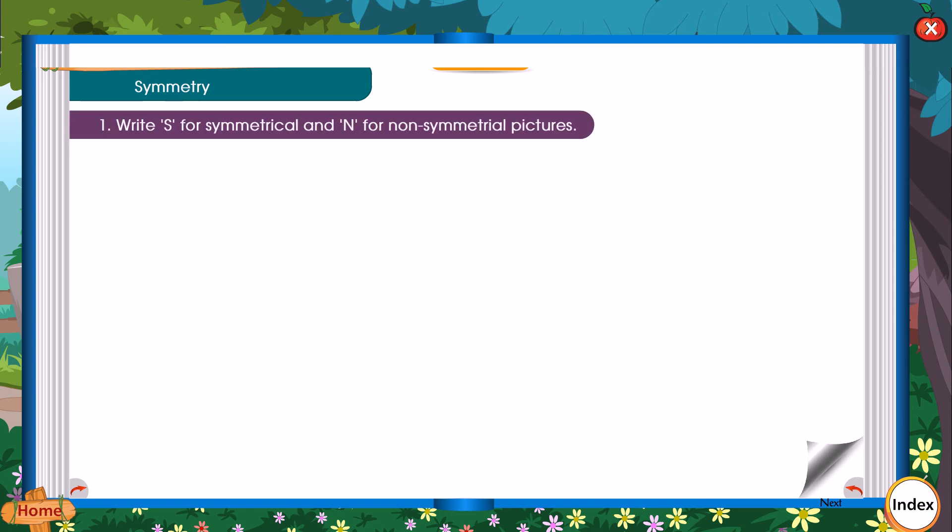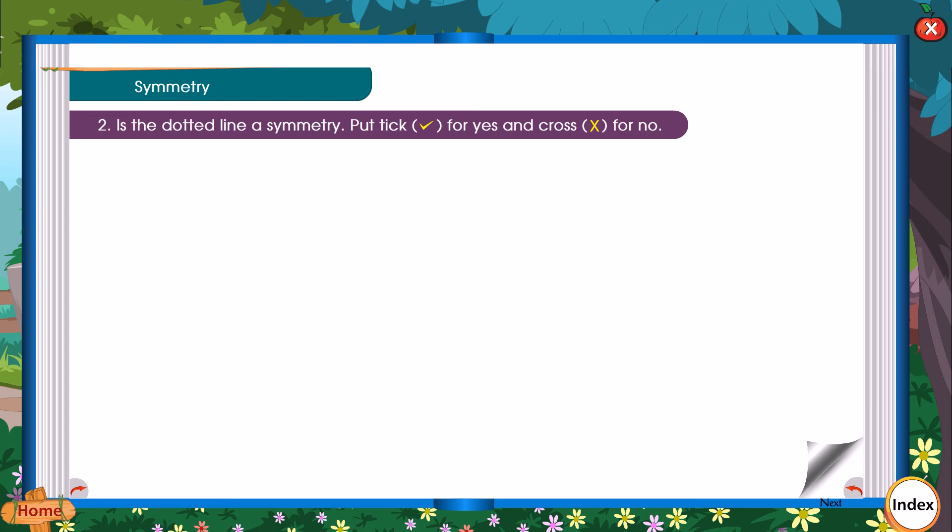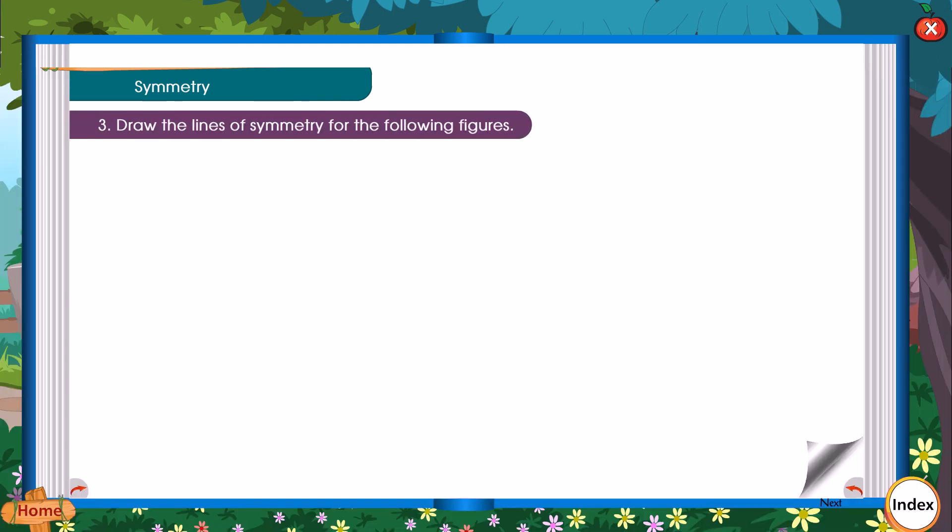Exercise: Write S for symmetrical and N for non-symmetrical pictures. Is the dotted line a line of symmetry? Put a tick for yes and cross for no. Draw the lines of symmetry for the following figures.